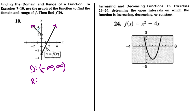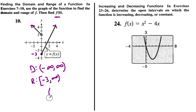For the range, if we look at this function, it goes up all the way to positive infinity for any possible y value. But there is a floor — a lowest value — which turns out to be negative 3. Is it equal to negative 3? Yes. In fact, at x = 0, it's equal to negative 3. So f(0) = negative 3, and it includes negative 3 with a hard bracket, heading off to positive infinity.